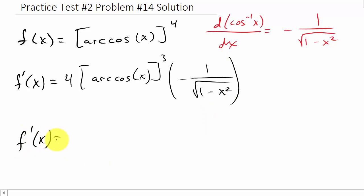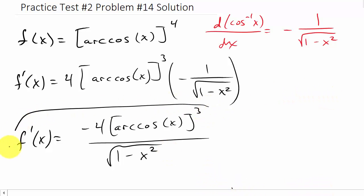And so f prime of x, we can put this together a little bit, so that's going to be negative 4 arc cosine x, and that would be cubed over the square root of 1 minus x squared. And so this would be your answer.